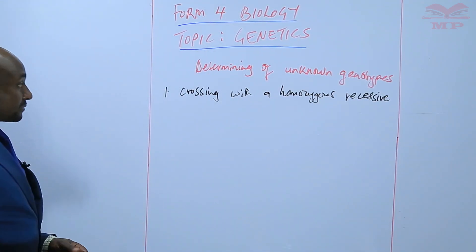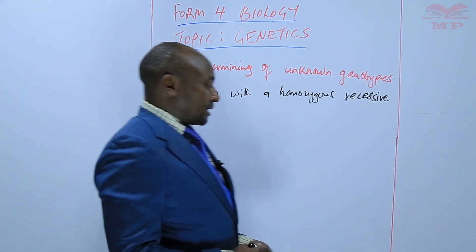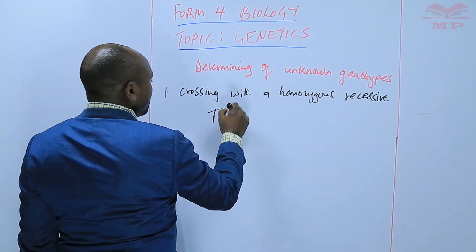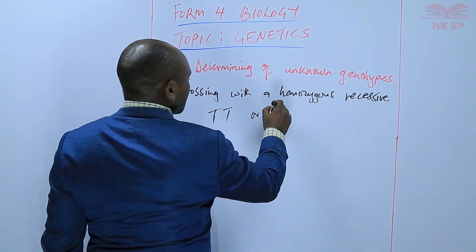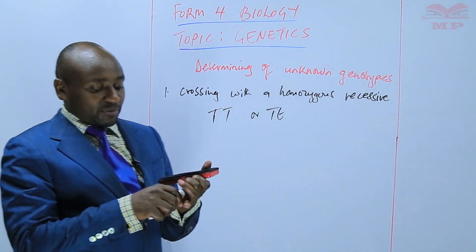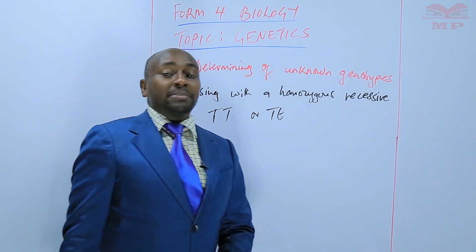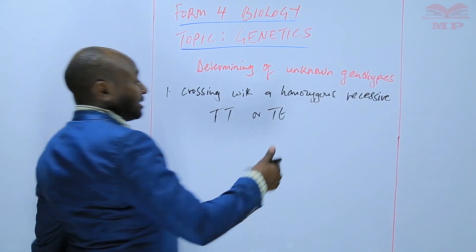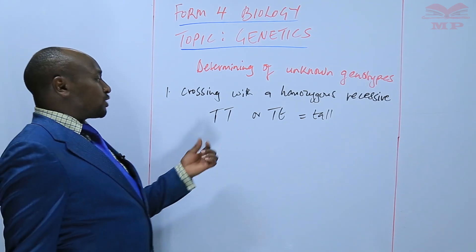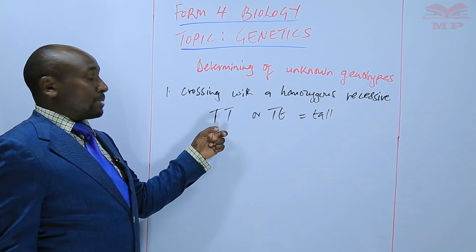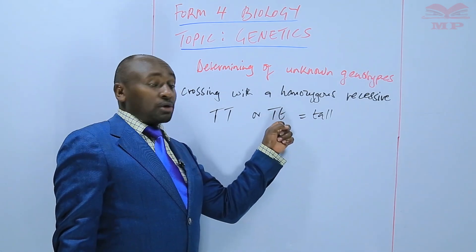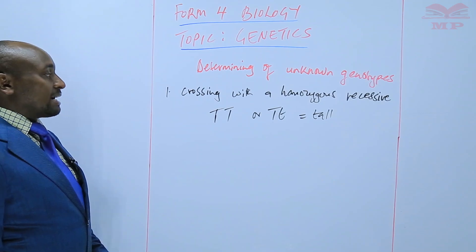For example, I may have a tall plant, but I don't know whether that tallness is as a result of the genotype capital T capital T, or capital T small t. Because in both cases they are tall. We observe the phenotype — the outward appearance — and in this case the outward appearance tells us they are tall. We want to find out whether that tallness results from genotype TT or Tt. So we can do that by crossing with a homozygous recessive.